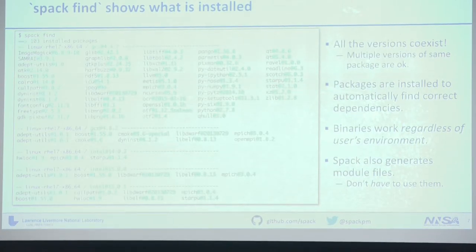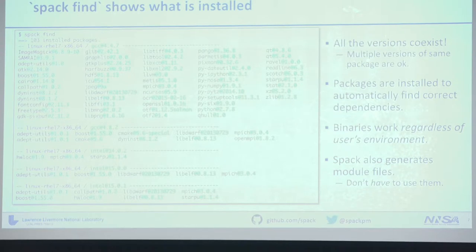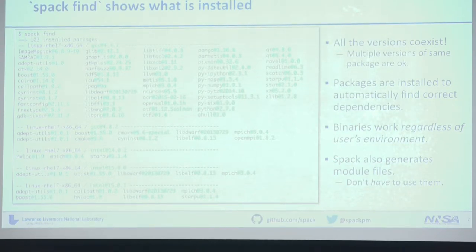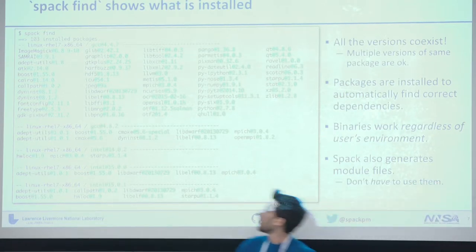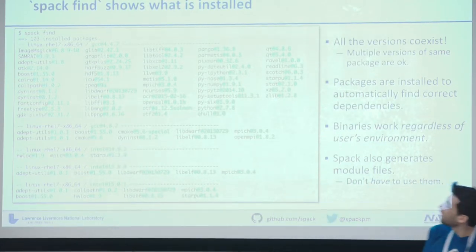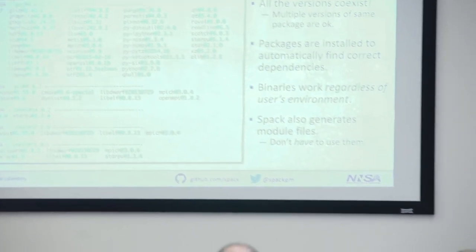'spack list' shows the available packages — we're well over 3,000 now. 'spack find' shows what you have installed. We can see here that we've got several different versions of adept-utils installed: two of them built with GCC 4.8.2 and one built with GCC 4.4.7. These binaries are all built to work regardless of the user environment — we rpath everything so at build time we know what we're building. We also generate module files, but you don't have to use them, and if you're using containers and module files, something went terribly wrong.